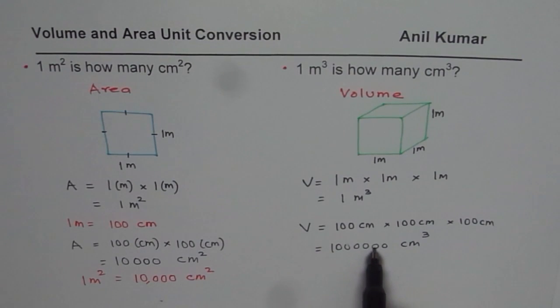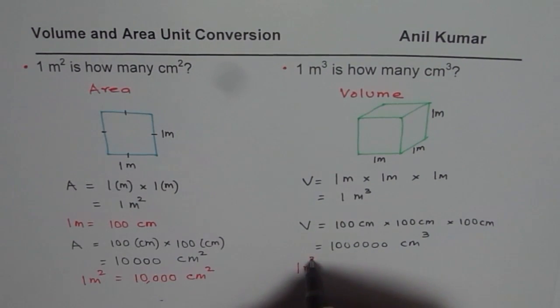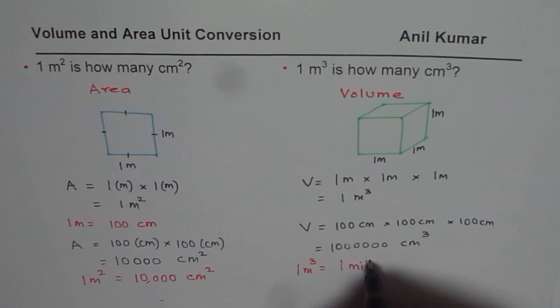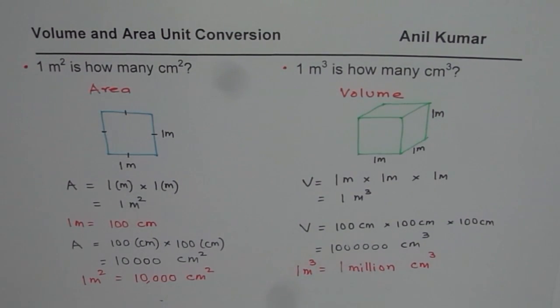Centimeter cube. So 1, 2, 3, 4, 5, 6 zeros. So that means 1 meter cube is how much? 1 meter cube equals 1 million centimeter cube. Do you see that? 6 zeros. So that is how meter cube is related with centimeter cube. Could you imagine that?